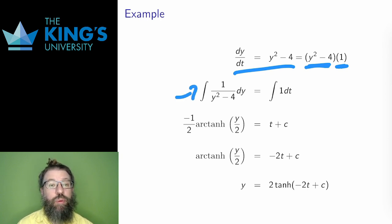The left is the hyperbolic arctangent integral, and the integral of a constant is, of course, t on the right. I add the constant of integration again on the right.